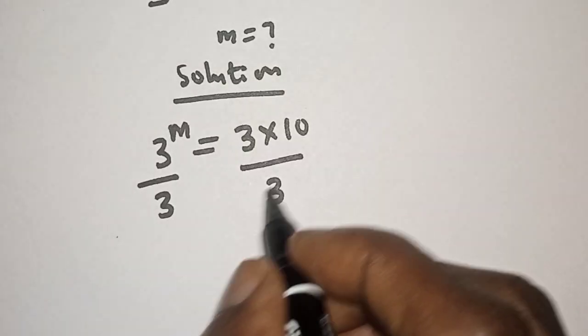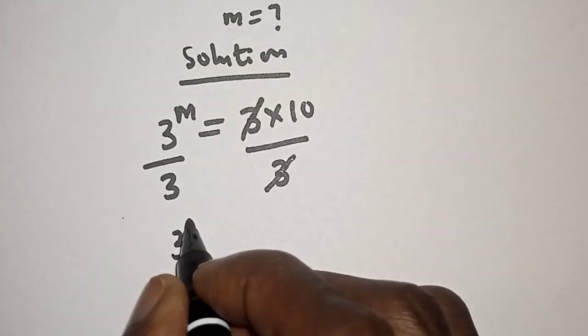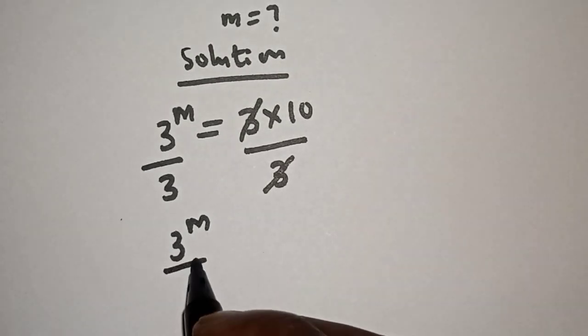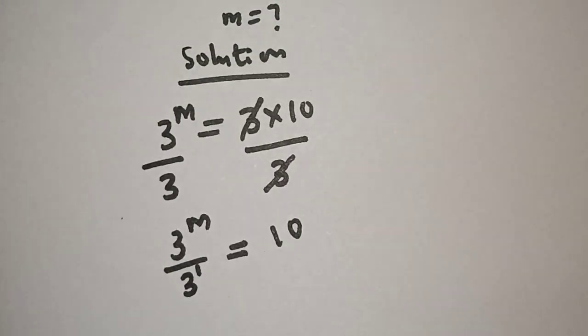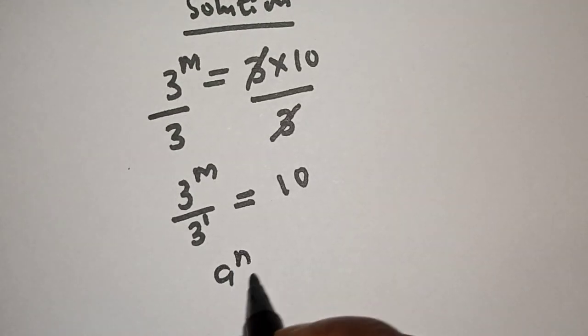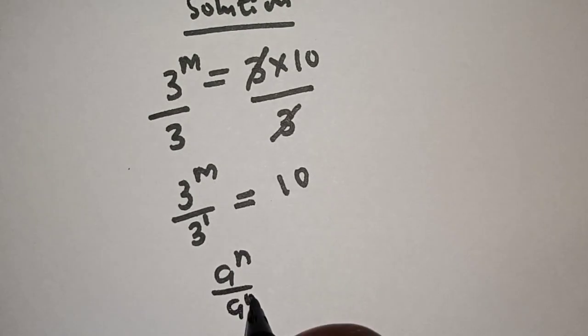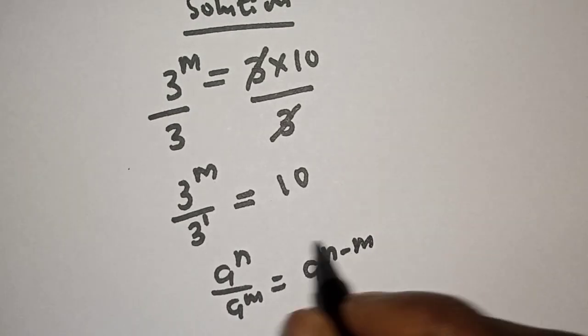So this one will cancel this. We have 3 raised to power m over 3, also raised to power 1, is equal to 10. And if you have a raised to power n over a raised to power m, this is equal to a raised to power n minus m.